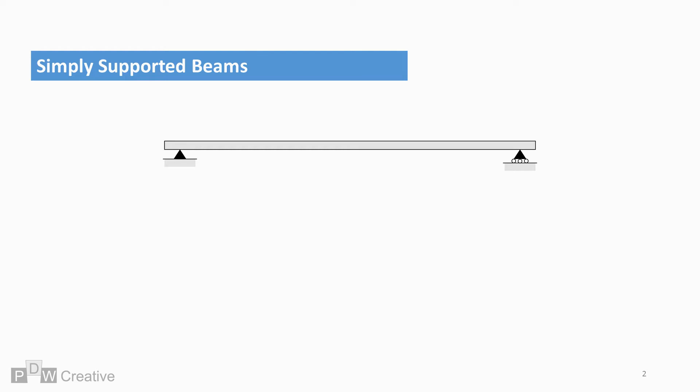A simply supported beam under point loading is a beam with supports at set distances along its length. The supports allow horizontal movement but restrict vertical movement. The example shown here features a pin at one end and a simple support at the other. The simple support gives horizontal flexibility.